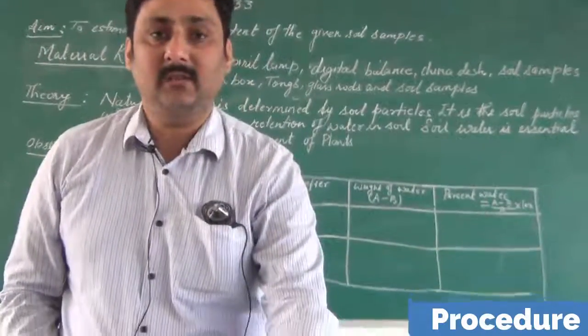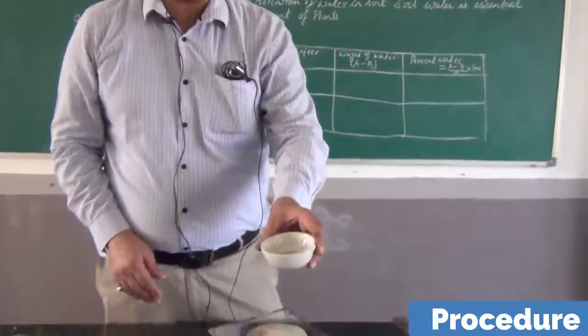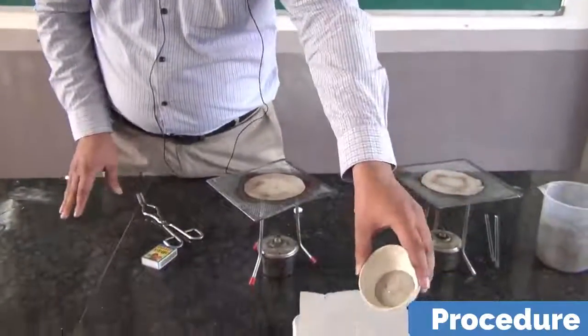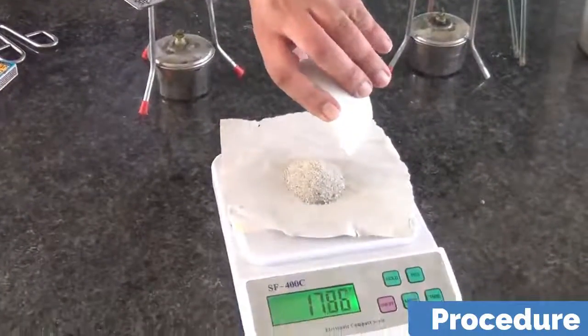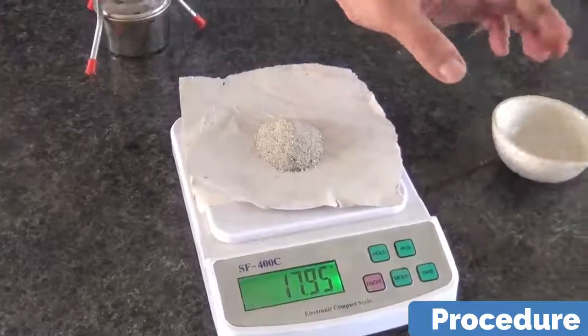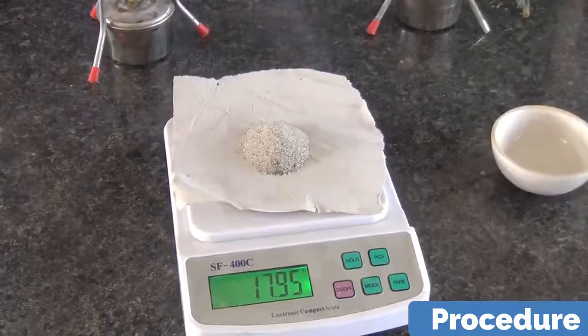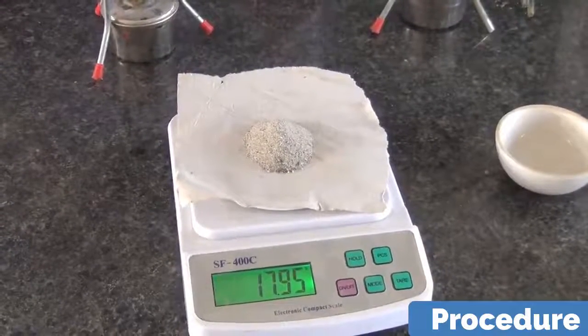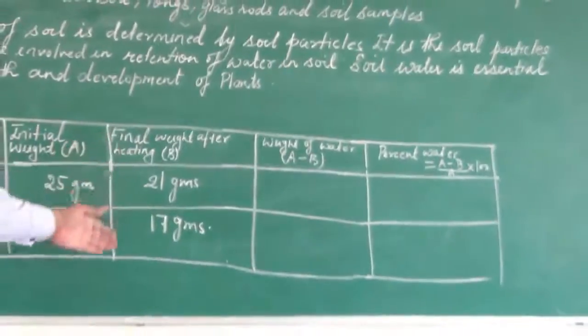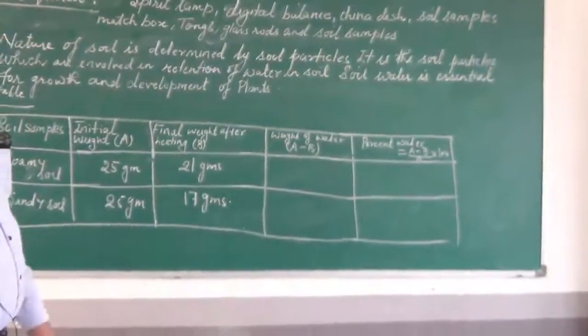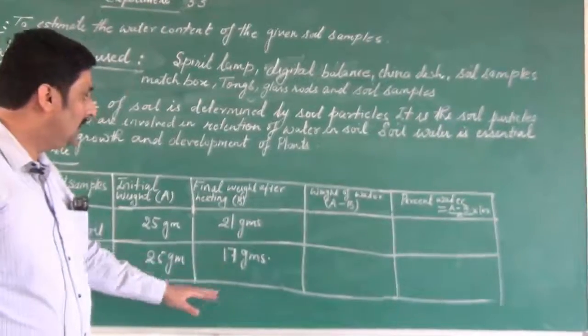Now see the sandy soil. We have to determine the B part, that is weight after heating for 10 minutes. So let us now weigh it on the digital balance. And you see the weight is something around 18, 17.95. So this is the final weight of the soil after heating as it is written on the board.